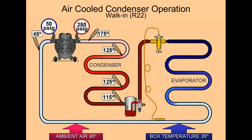So we have an air-cooled condenser, walk-in system, R22. Box temperature is 35 degrees, ambient temperature is 95. We have a 175 degree discharge temperature with 280 psig discharge pressure. If you look at your PT chart or your gauges, you'll see that 280 psig equates to a 125 degree condensing temperature.